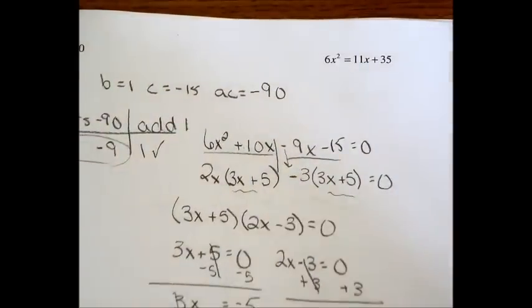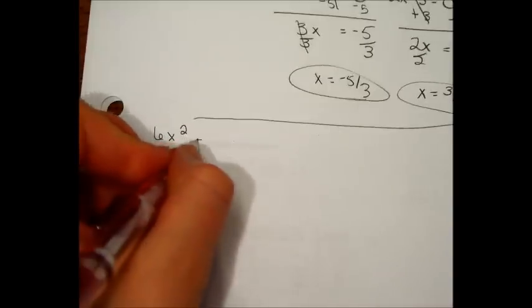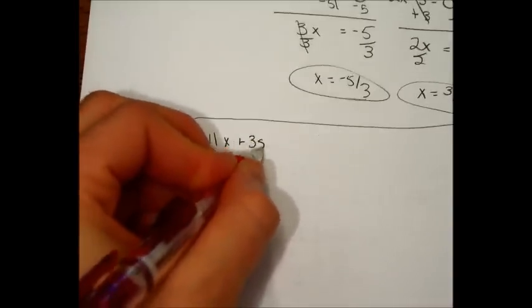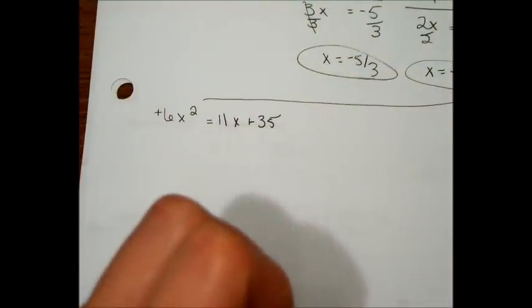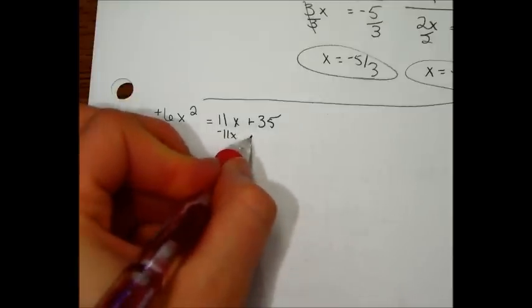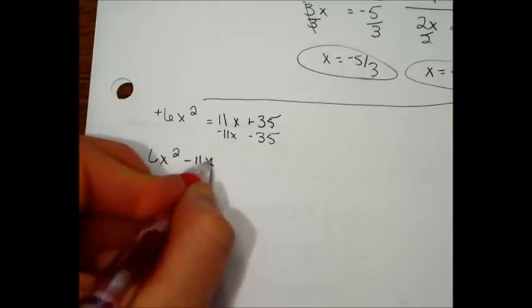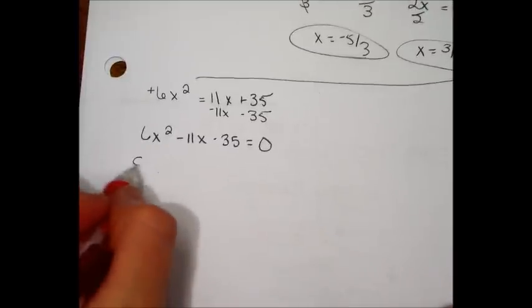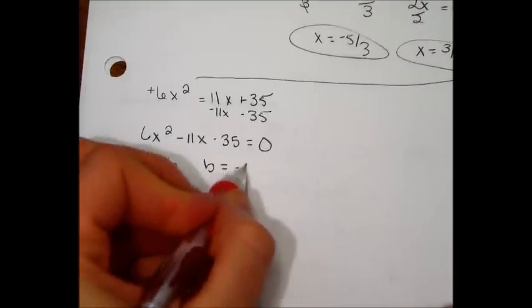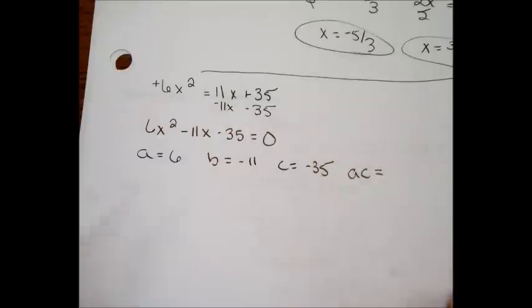The last one we're going to do, I'm going to put it down here because I kind of ran into the other problem. It was 6x squared equals 11x plus 35. I have to set it equal to 0. Please always keep the x squared positive. Minus 11x minus 35 will do that. So you're going to get 6x squared minus 11x because we're moving it, minus 35 because we're moving it, and it equals 0. Now, a is 6, b is negative 11, c is negative 35, and ac I am using a calculator for.